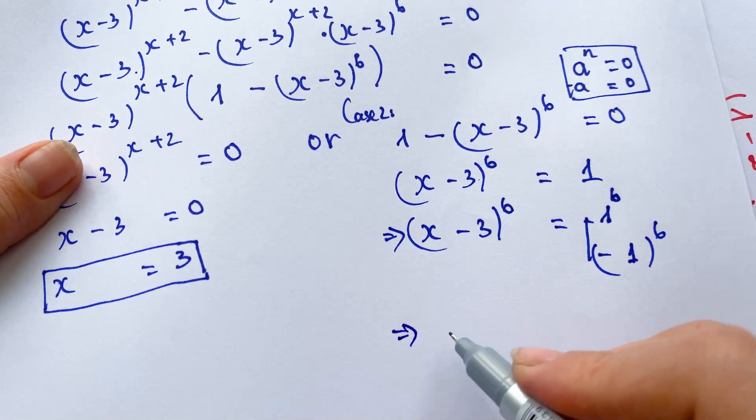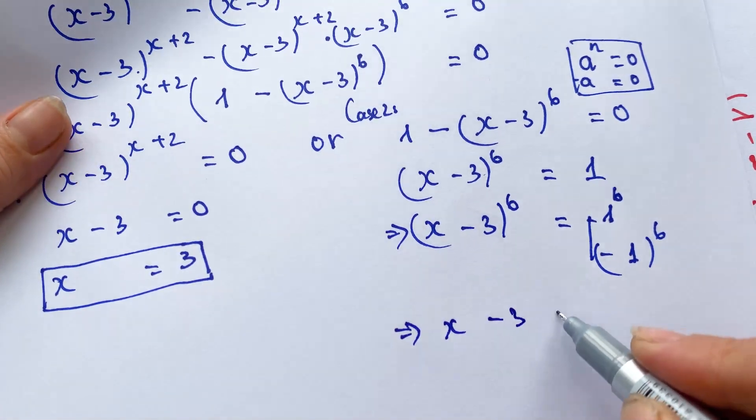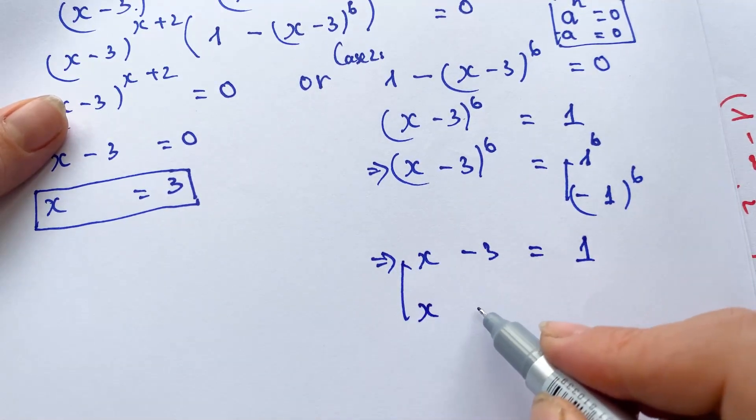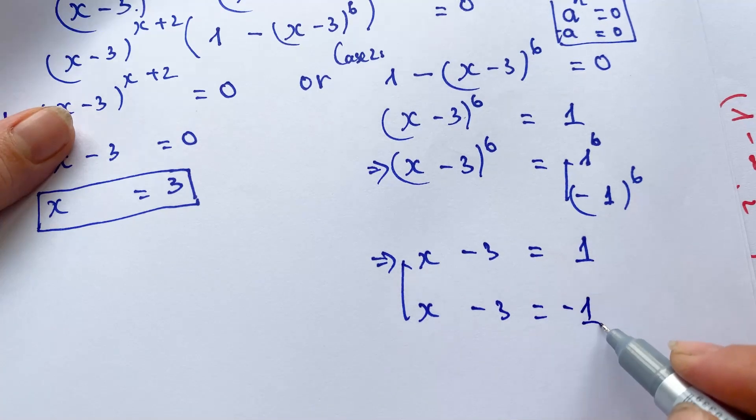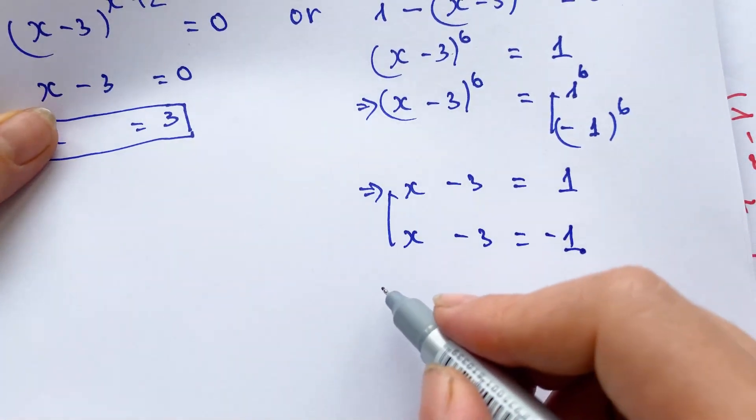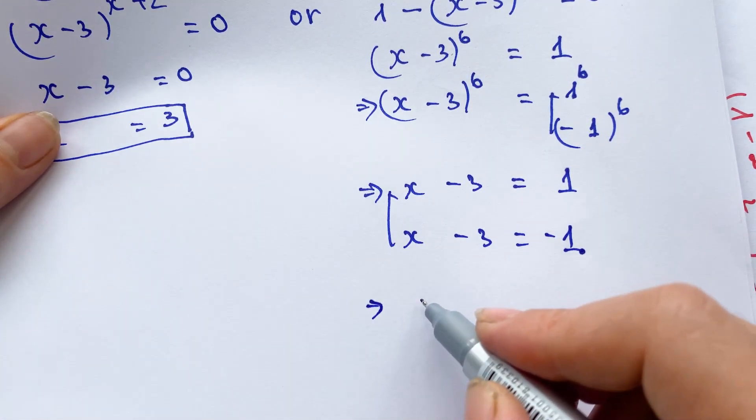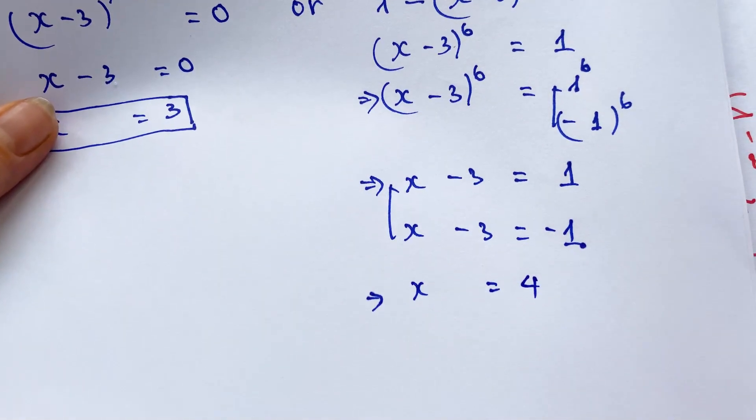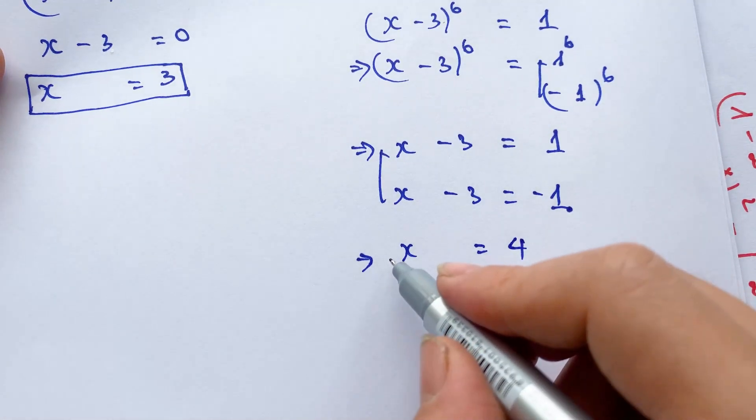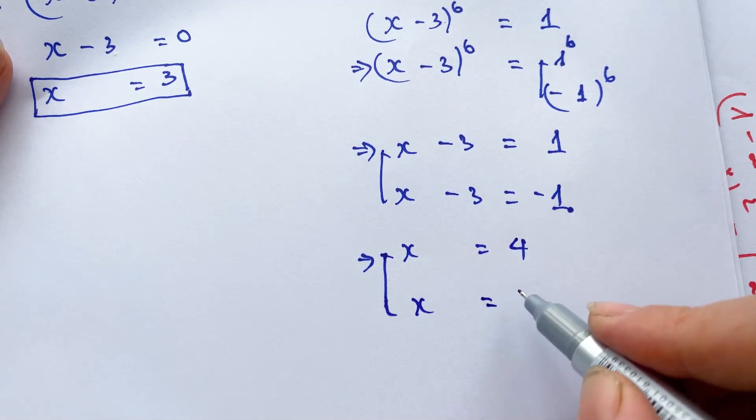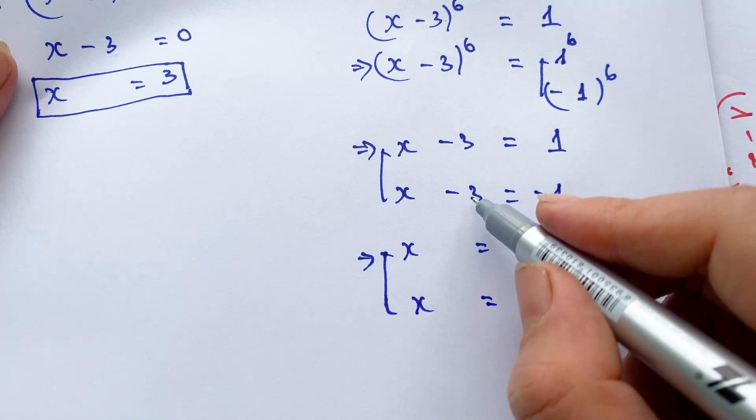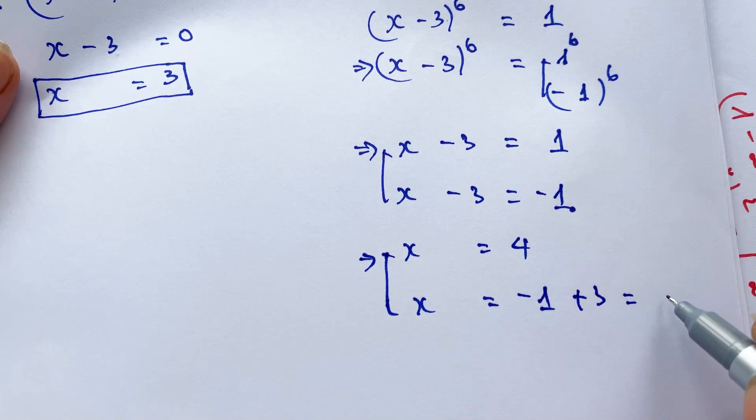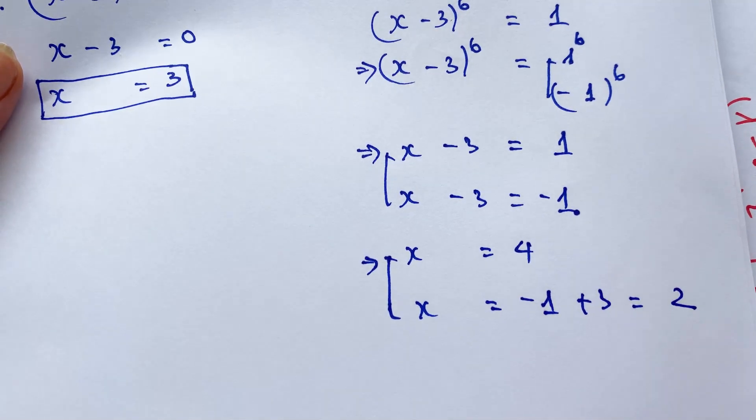And then, we can write x-3 equals 1, or x-3 equals -1. And then, we need to find x equals 1 plus 3 equals 4, and x equals 2.